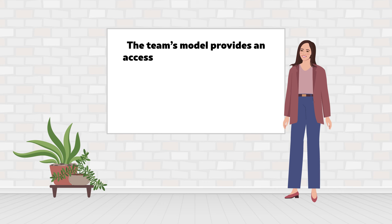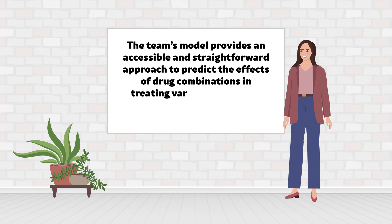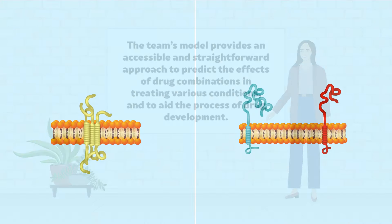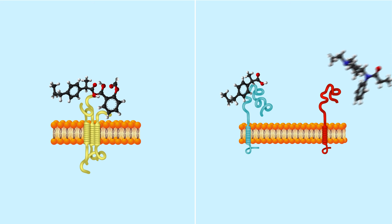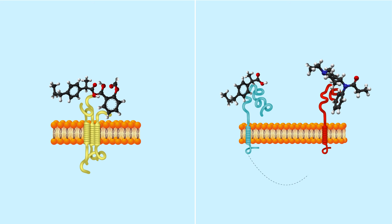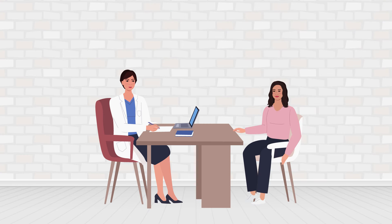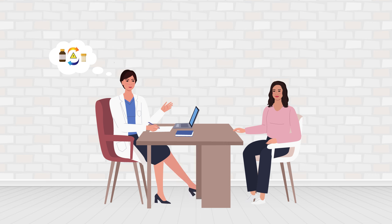The team's model provides an accessible and straightforward approach to predict the effects of drug combinations in treating various conditions and to aid the process of drug development. Considering drugs that bind to connected proteins, in addition to drugs with shared binding proteins, is an effective way to predict adverse interactions and their impact on patient safety and disease outcomes. The team's work will help medical professionals to avoid causing harm by unintentionally mixing incompatible drugs, while also enabling them to improve patient outcomes by harnessing beneficial combinations.